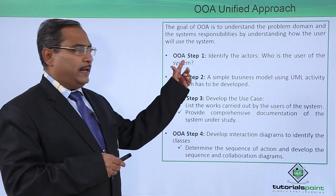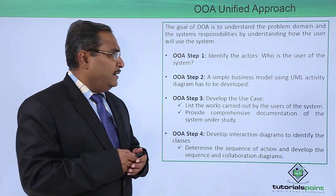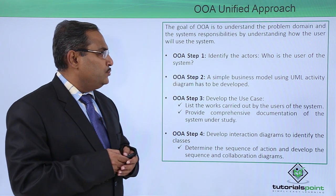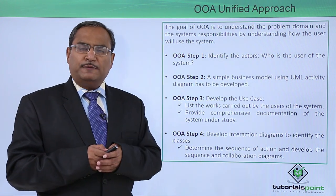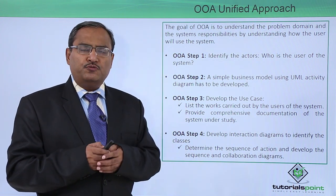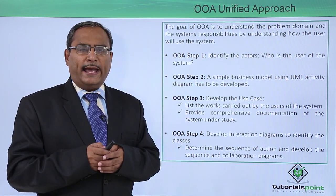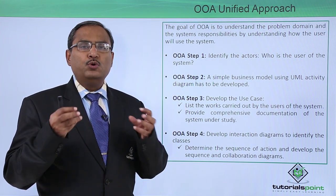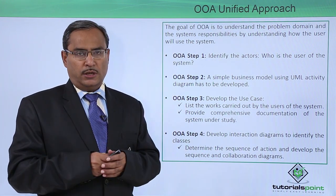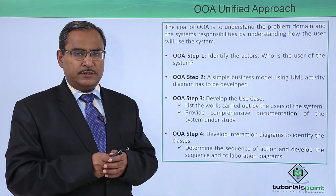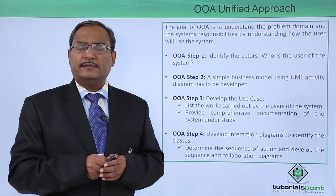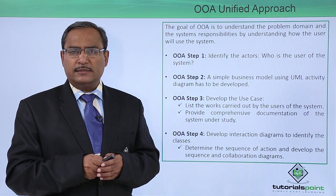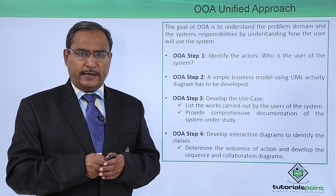OOA Step 1: Identify the Actors — who is the user of the system. We are supposed to find out all the Actors, meaning who will be the users of the system. These Actors can be categorized as Primary Actors and Secondary Actors.